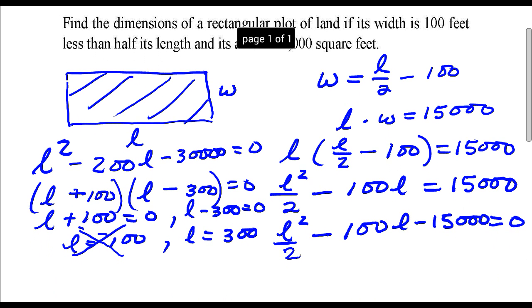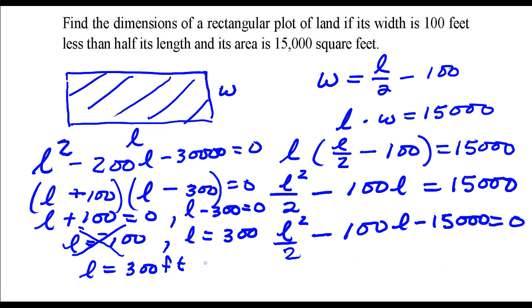So it looks like, this is our answer, length is 300 feet and the width, we go back to this first equation where the width is length divided by 2 minus 100.